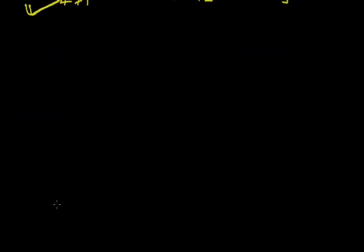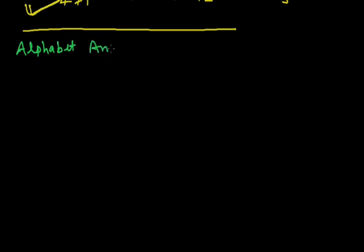Next type of question asked in analogy is alphabet analogy. In these questions, two groups of letters related to each other in some way are given. You are required to find out the relationship and then choose either a letter group which is related in the same way to a third group, or a pair consisting of similarly related letter groups. Here are some questions based on alphabet analogy.